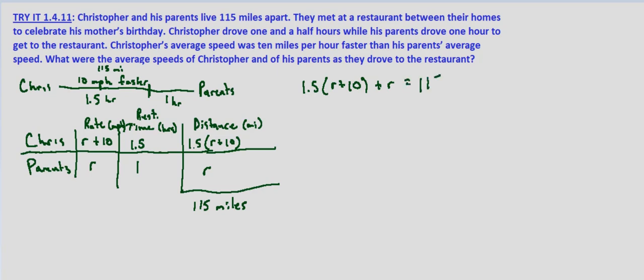So we can take 1.5 times (R plus 10) plus R, and we know that that total distance is 115 miles. Distribute the 1.5: 1.5R plus 15 plus R equals 115. Combine like terms: 2.5R plus 15 equals 115. Subtract 15 from both sides: 2.5R equals 100. And dividing both sides by 2.5, we get R equals 40 miles per hour.